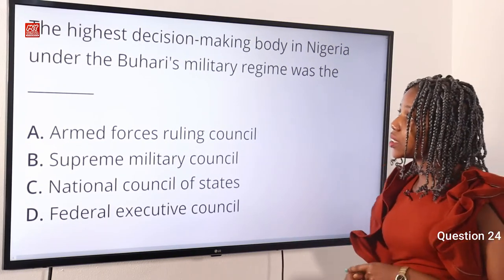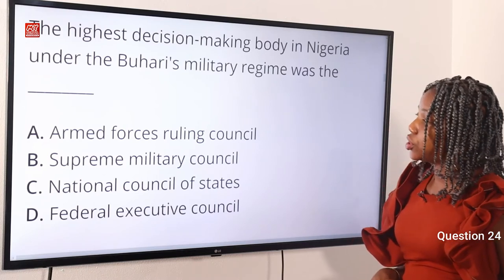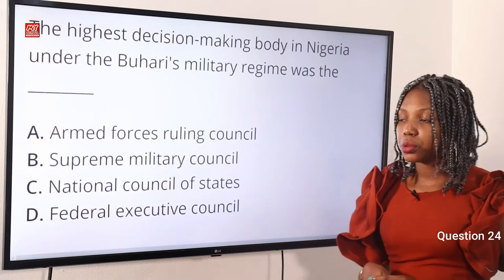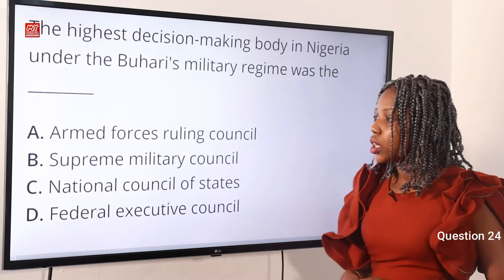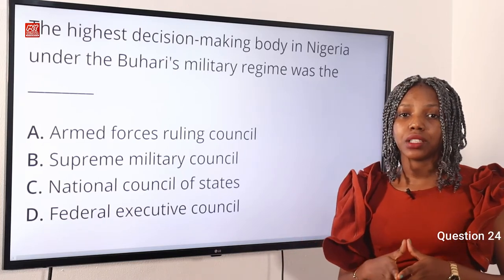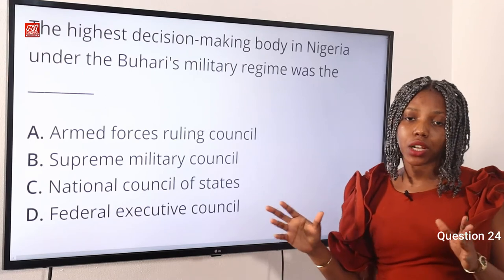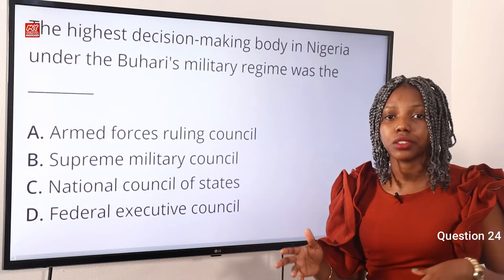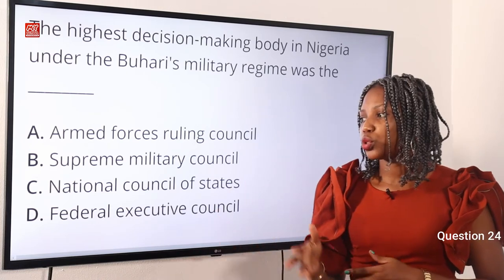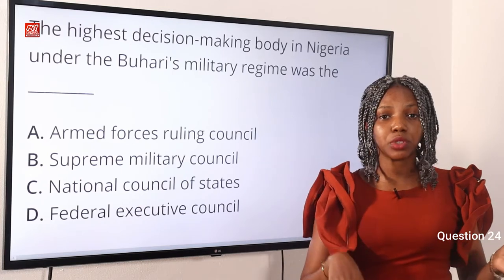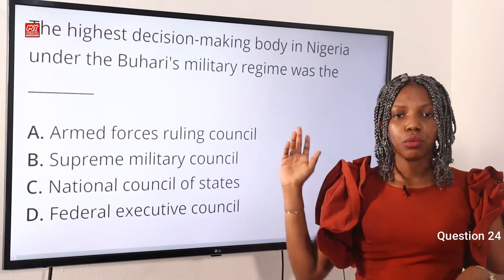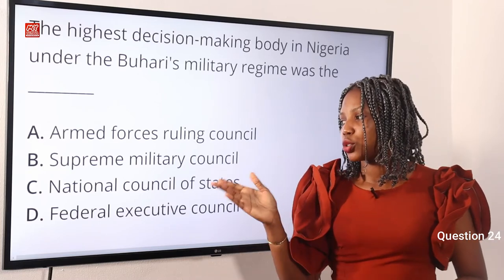Question 24. The highest decision-making body in Nigeria under Buhari's military regime was dash. Option A, Armed Forces Ruling Council. Option B, Supreme Military Council. Option C, National Council of States. Option D, Federal Executive Council. The answer is Supreme Military Council. The Supreme Military Council had its chairman in the person of Muhammad Buhari, who was also acting as head of state. It ruled Nigeria after the 1983 coup d'état. However, the Armed Forces Ruling Council was established by Ibrahim Babangida after the 1985 coup d'état which overthrew Buhari. Option B is correct.